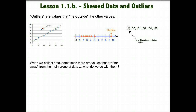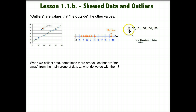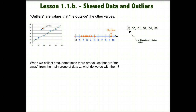Outliers are values that lie outside the other values. You can see the outlier in each of these examples. In the first one, there's a line plotted with dots and one point is clearly outside the line — an outlier. Here you have a line plot with an outlier far away from the rest of the data. Sometimes you just see numbers where one is definitely not similar to the others. When we collect data, sometimes there are values far away from the main group. What do we do with them, and what do we know about them? We have to understand what they do to our data.